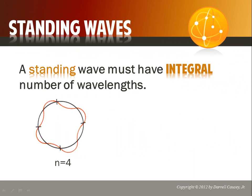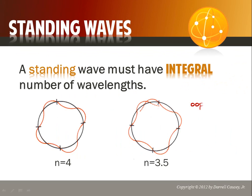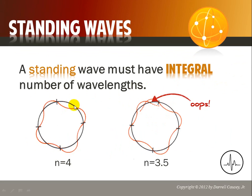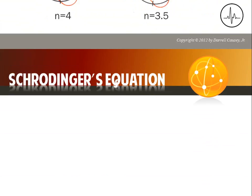A standing wave must have an integral number of wavelengths. If it doesn't, it will collapse on itself. But with an integral number of waves — whether n equals 4 or n equals 5 — that integral number allows it to go around. This fits very much into the idea that the electron, photons, and all these things have to be in discrete amounts — they have to be quantized.